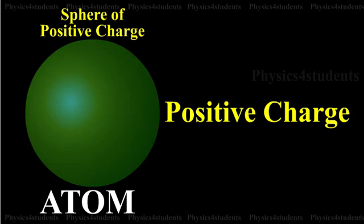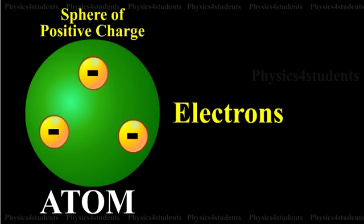The positive charge is uniformly distributed over the entire sphere and the electrons are embedded in the sphere of positive charge as shown in the figure.